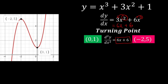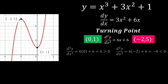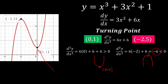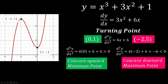Plugging in x = 0: d²y/dx² = 6, which is positive — meaning concave upward, so (0, 1) is the minimum point, which is confirmed by the graph. Plugging in x = −2: d²y/dx² = −6, which is negative — meaning concave downward, so (−2, 5) is the maximum point, also confirmed by the graph.